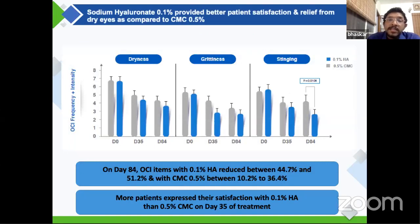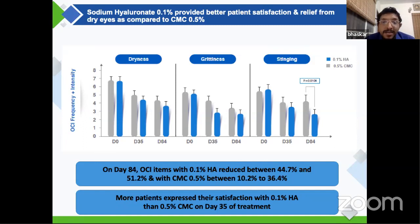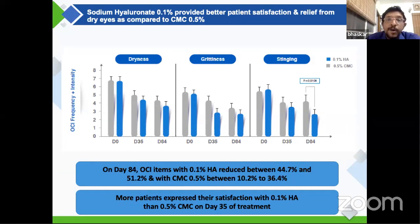Regarding subjective patient comfort, one study looked at symptom comfort in terms of dryness, grittiness, and stinging. At day zero, both groups had the same level of complaints. By day 35 and day 84, dryness, grittiness, and stinging were significantly better in the sodium hyaluronate group compared to the CMC group — with grittiness and stinging showing particularly significant improvement. More patients expressed satisfaction with 0.1% HA than with 0.5% CMC at day 35, showing sodium hyaluronate performs better than competitor 0.5% CMC from a patient comfort perspective.